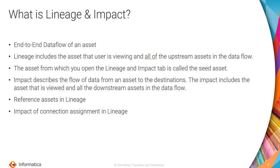Impact describes the flow of data from an asset to the destinations. Impact shows you where the data is used and which assets might be affected if you change the asset that you are viewing. When you view an asset in a Lineage and Impact diagram, the Impact includes the asset that you are viewing and all of the downstream assets in the data flow.